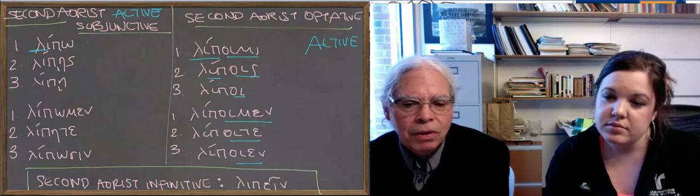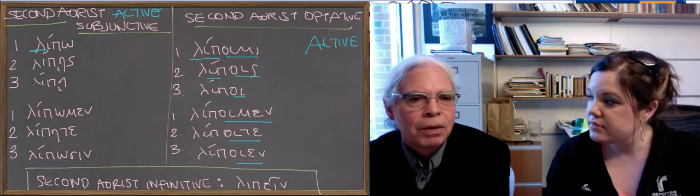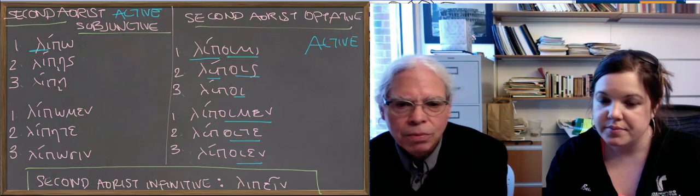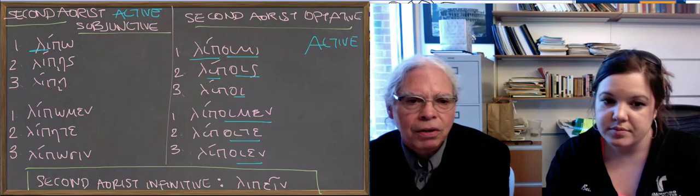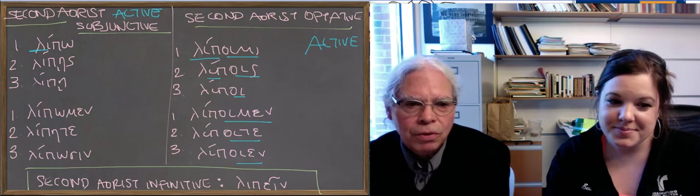In the aorist indicative, they look like they have the endings of the imperfect, but a change in the stem. In the subjunctive and the optative, you have that same stem, lip in this case, and you add the endings of the subjunctive and the optative as usual.